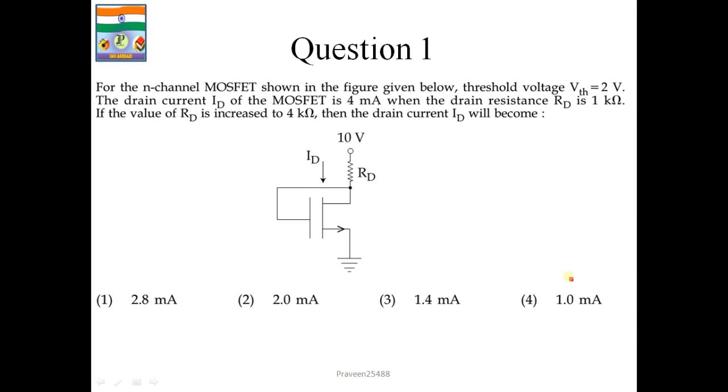This is question number 1. For the n-channel MOSFET shown in the figure given below, threshold voltage VTS is equal to 2V. The drain current ID of the MOSFET is 4 mA. When the drain resistance RD is 1 kΩ. If the value of RD is increased to 4 kΩ, then the drain current ID will become. So first, we will write KVL equation for this. 10 minus RD ID is equal to VD.